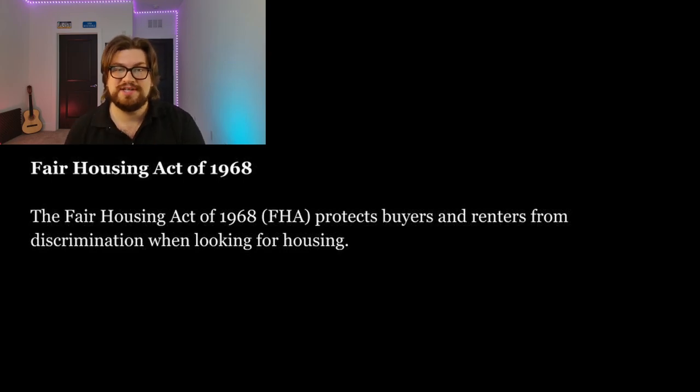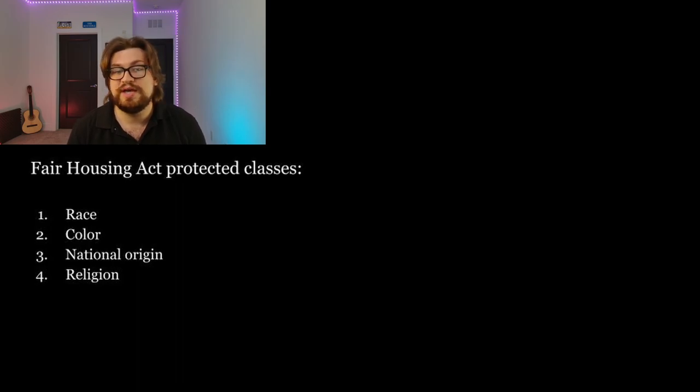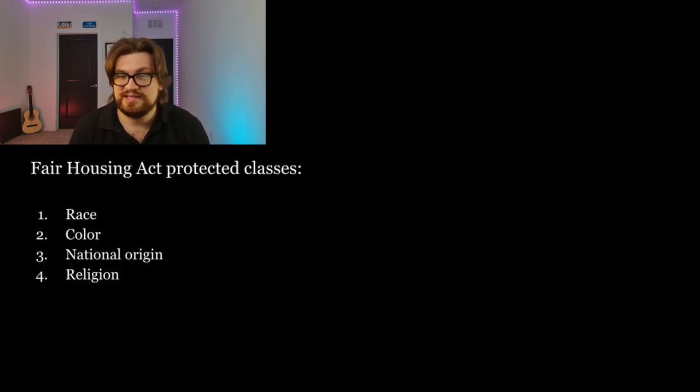The Civil Rights Act of 1968 expanded on previous acts and notably prohibited discrimination concerning the sale, rental, and financing of housing. This was introduced by Title VIII of the Act, also known as the Fair Housing Act of 1968. The Fair Housing Act of 1968 protects buyers and renters from discrimination when looking for housing. When first enacted, it included the following protected classes: race, color, national origin, and religion. Since 1968, more protected classes have been added to the list.